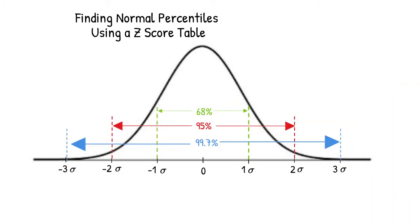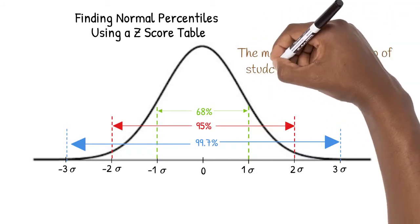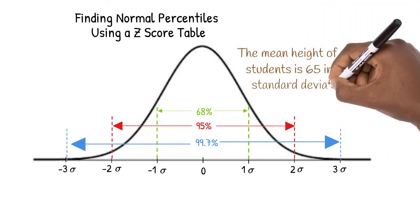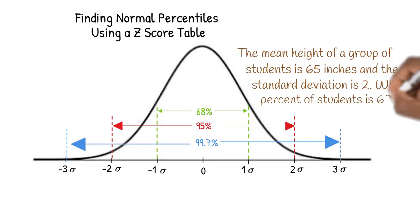Let's look at an example that requires us to go a bit further. The mean height of a group of students is 65 inches and the standard deviation is 2. What percent of students is 60.5 inches or shorter?